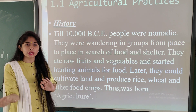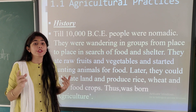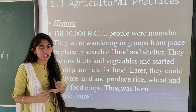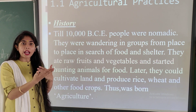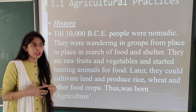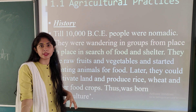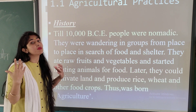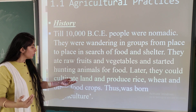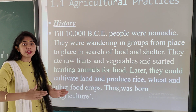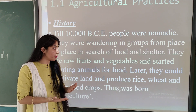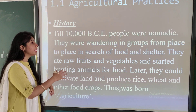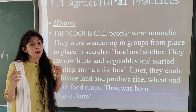Later, they could cultivate land and produce rice, wheat, and other food crops. By roaming from one place to another, they were searching for food and shelter — food was needed, and shelter was needed to protect from the sun, floods, and wild animals. In later stages, they started producing crops in the fields, and in this way, agriculture was born.